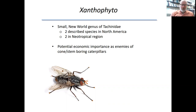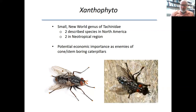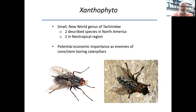Xanthophyto are relatively large flies, bigger than a housefly, drably marked black and gray with a tessellated abdomen, often with a reddish tergite 5, which strongly resembles sarcophagines. And I don't think this is just chance — they are clearly mimicking sarcophagines. I don't know why that might be, but we can maybe talk about it over a beer.